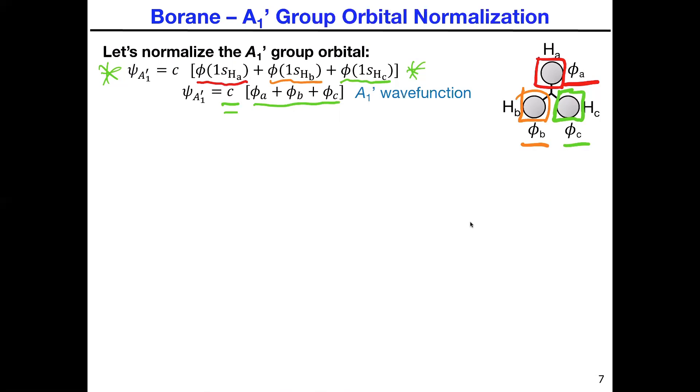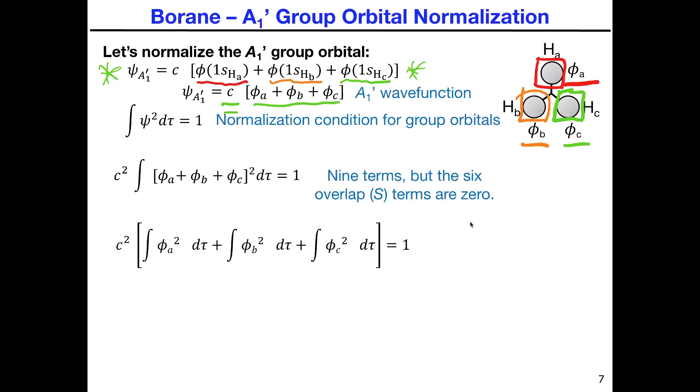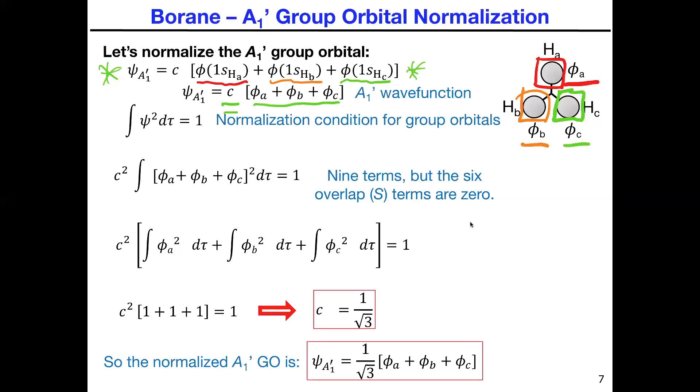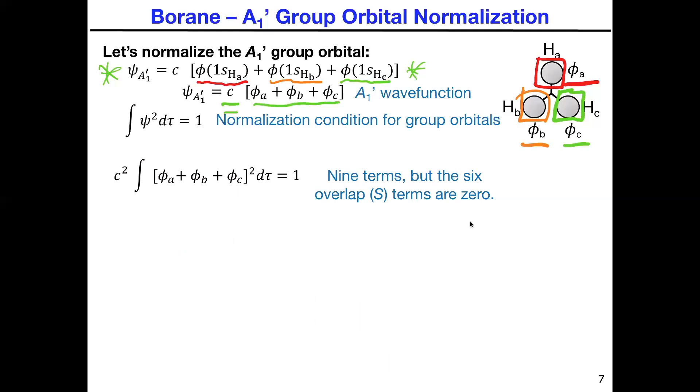The next step is we have to normalize. To normalize, we literally have to take that entire wave function and square it. Why do we square it? Because then the probability of finding the electron in that new group orbital wave function has to have a probability of 100%, or integrated and normalized, has to have an integral that's one.